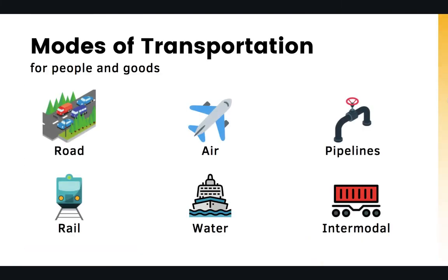Talking about modes of transportation for both people and goods — something all of us are familiar with — different modes include roads or highway infrastructure, railways, air, water or marine transportation, transportation of energy through pipelines, and intermodal transportation, such as transporting cargo and freight by water or marine transport and then transferring to trucks for the final destination.